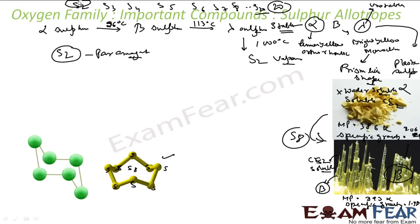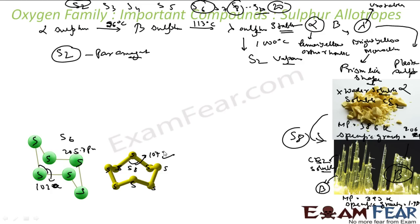S6 is another allotrope. Six sulfur atoms are arranged in a cyclic ring forming a chair-like structure. The bond length in S6 is almost 205.7 picometres and the bond angle is 102 degrees. In the S8 structure, the bond angle is 107 degrees and the bond length between two sulfur atoms is 204 picometres.